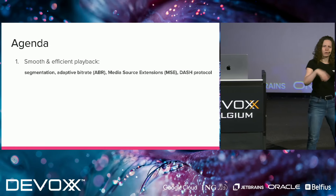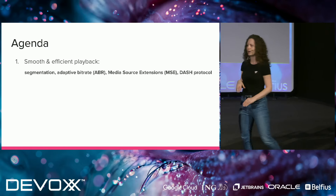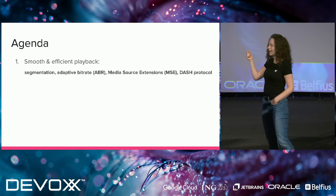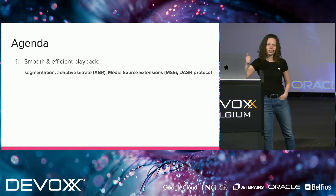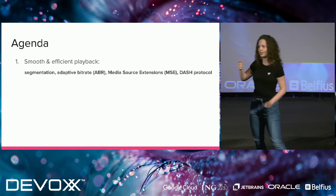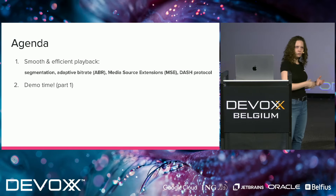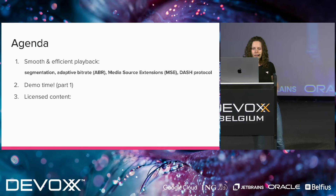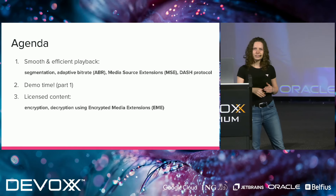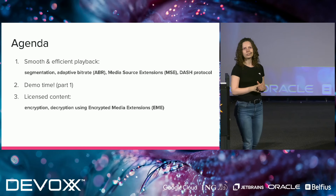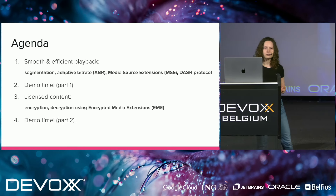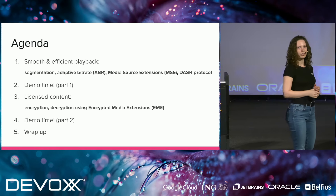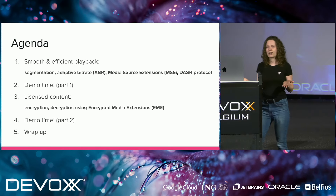Going back to the agenda: we'll talk about how to ensure smooth and efficient playback, covering segmentation, adaptive bitrate, DASH protocol, and Media Source Extensions. Later we'll turn all this theory into action in a demo. After that, we'll talk about licensed content — how to encrypt and decrypt content using Encrypted Media Extensions — and we'll see how that works in action too. Last but not least, we'll do a quick wrap-up to summarize what we've learned today.